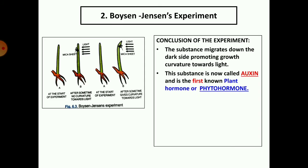Later on, Boysen and Jensen, two scientists, carried out a number of experiments and came to certain conclusions. They took a mica sheet and inserted it at the tip of the coleoptile on the darker side, and found that the coleoptile did not bend towards light. But when they inserted it on the lighted side, it still bent towards the light. They concluded that whatever that substance was, it migrated down the dark side and promoted growth curvature towards the light. The substance was known as phytohormone, and it was the first phytohormone known, called auxin.